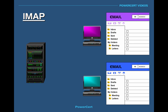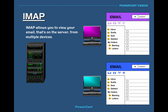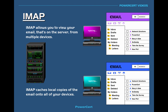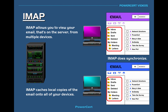Now let's talk about IMAP. IMAP stands for Internet Message Access Protocol. IMAP is also used for retrieving email, but it's a little bit different. IMAP allows you to view your email that's on the server from multiple devices. The email is kept on the server and it caches local copies of the email onto all of your devices, and it synchronizes all of your folders and everything in them.